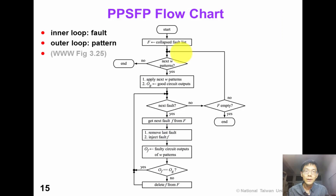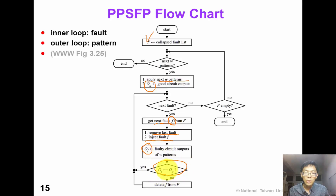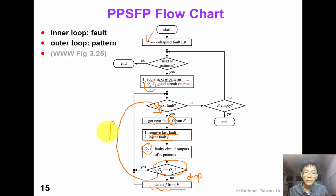Here is the PPSFP flowchart. Initially, big F is the collapsed fault list. We apply W patterns in parallel and obtain the good output OG. Then we get the next fault F from the fault list, remove the effect of the last fault, and inject the new fault F to obtain the faulty circuit output OF. We compare OF and OG — if they are the same, fault F is not detected; if they differ, the fault is detected and we remove it from the fault list, which is called fault dropping. In this flowchart, the inner loop iterates over faults and the outer loop iterates over patterns.